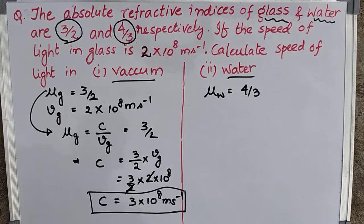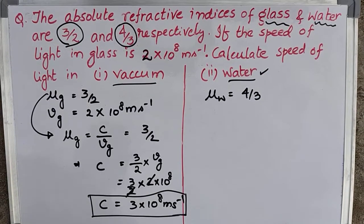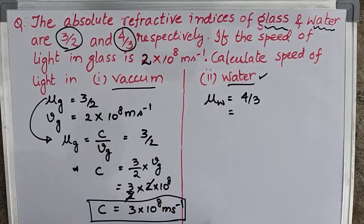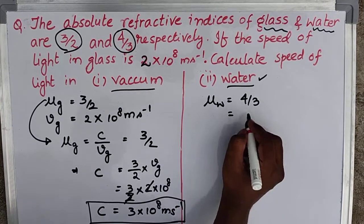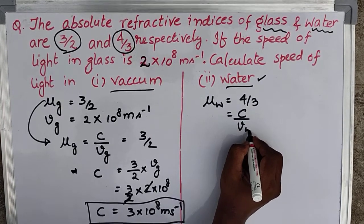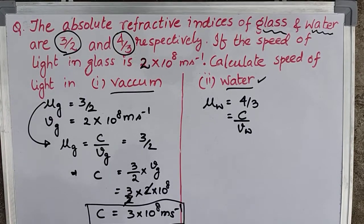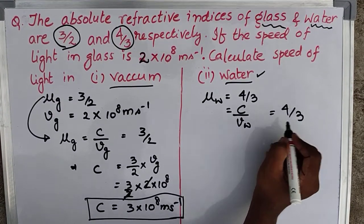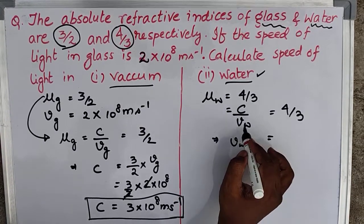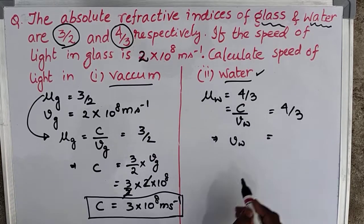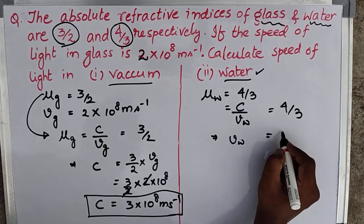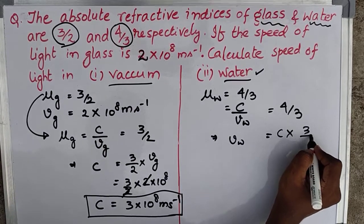Now let's come to the second part where we are supposed to find the velocity of light in water. Using the same definition: the refractive index of water equals speed of light in vacuum divided by speed of light in water, Vw, which equals 4/3. So Vw equals C × (3/4).